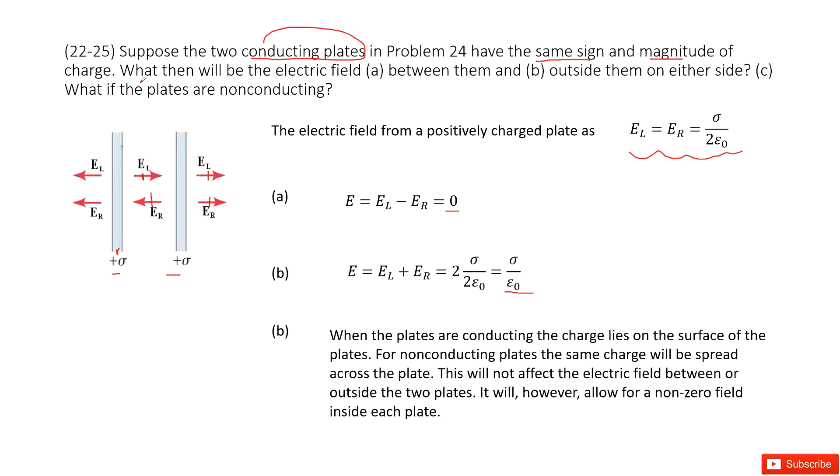The next one asks what if the planes are non-conducting? Nothing changes. If these two planes are non-conducting, that means the charges were uniformly distributed on this plane. But it will not affect the electric field between and outside of the planes because the enclosed charge will not change. The only thing that changes is the electric field inside of this plane will not be zero.